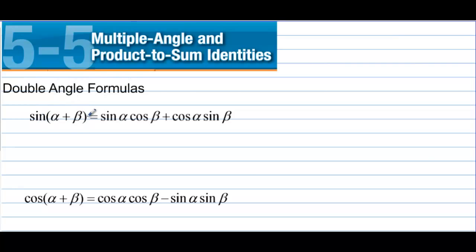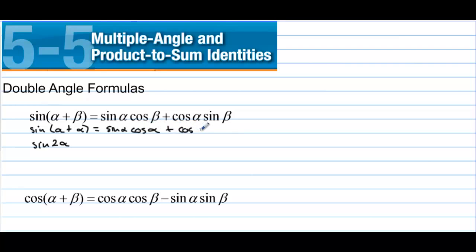Double angle formulas. Starting with the sum of two angles formula, sine of alpha plus beta equals sine alpha cosine beta plus cosine alpha sine beta. If we set both angles equal — sine of 2 alpha — that gives us sine alpha cosine alpha plus cosine alpha sine alpha. Since these two terms are the same, the double angle formula for sine is 2 sine alpha cosine alpha.